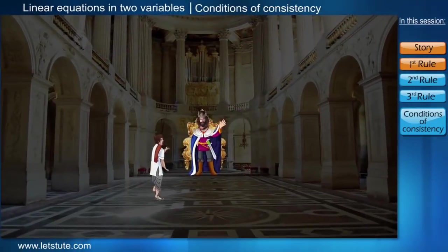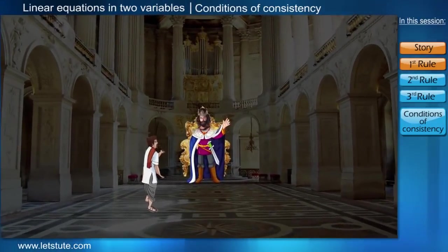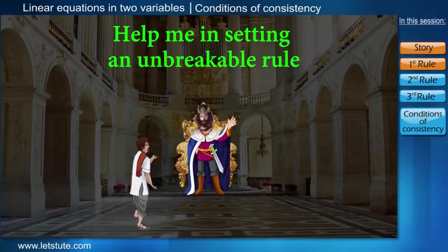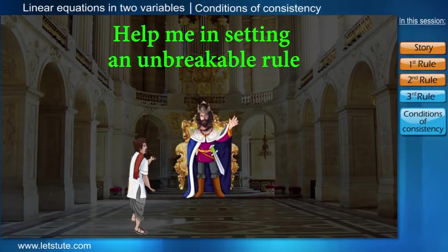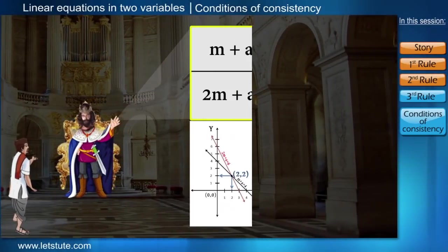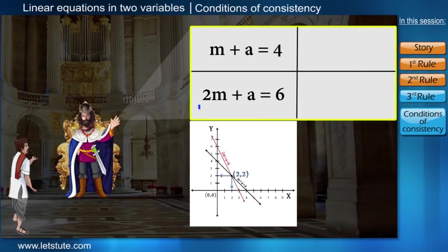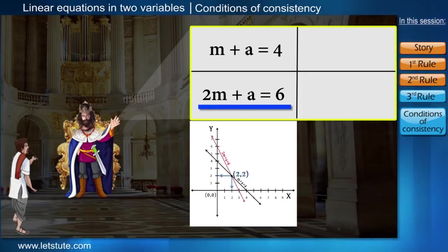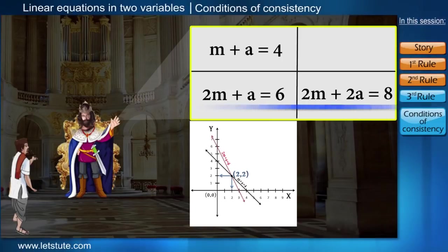After hearing the man, the king was happy to know that there is someone who will help him to set an unbreakable rule. King gave him another pair of combination and asked to find the loophole. The earlier equation 2m plus a equal to 6 was little modified as 2m plus 2a equal to 8. And the second equation remained as it is.